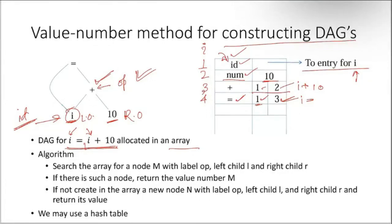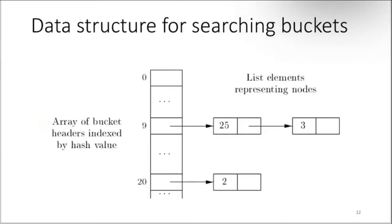The algorithm searches the array for a node m with label operator, left child l, and right child r. If there is such a node, return the value member m. If an identical node is not found, a new node n will be created, labeled with the operator, left child l, right child r, and its value is returned. This is the way of developing a DAG.